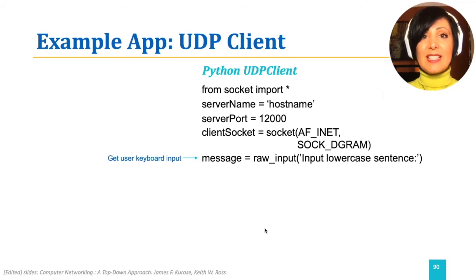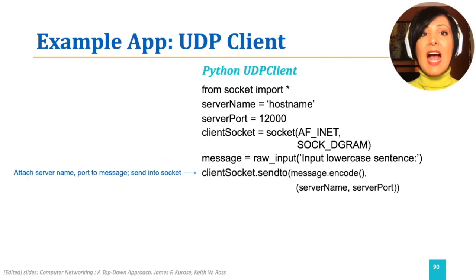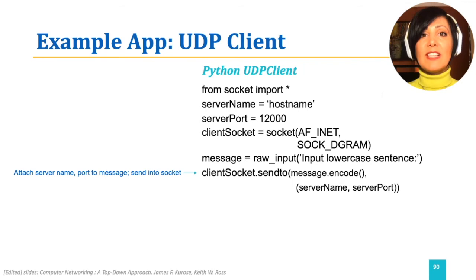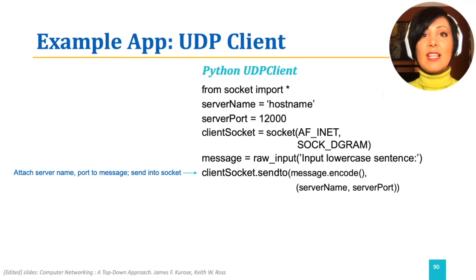The next step is to send the message received from the user out the socket and towards the known server port. Note that the server port is the saved variable defined above, holding the value of 12,000. Server name is also the value defined above. Message.encode uses the Python string encode method to encode the input string to a specified or default encoding.